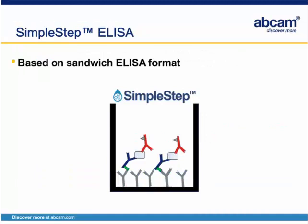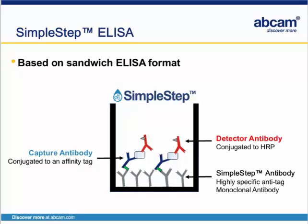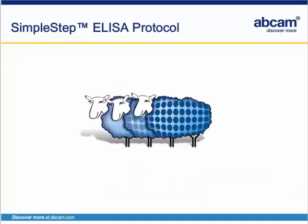The Simple Step ELISA follows the exact same methodology and is based on the sandwich ELISA format. A Simple Step ELISA utilizes a capture antibody that is conjugated to an affinity tag, and a detector antibody that is conjugated to HRP. Together, these two antibodies complete the sandwich ELISA. In order for the sandwich complex to remain bound to the microtiter plate, every well in a Simple Step ELISA is pre-coated with a highly specific anti-tag monoclonal antibody. This antibody binds to the affinity tag conjugated to the capture antibody, and is essential for this technology.